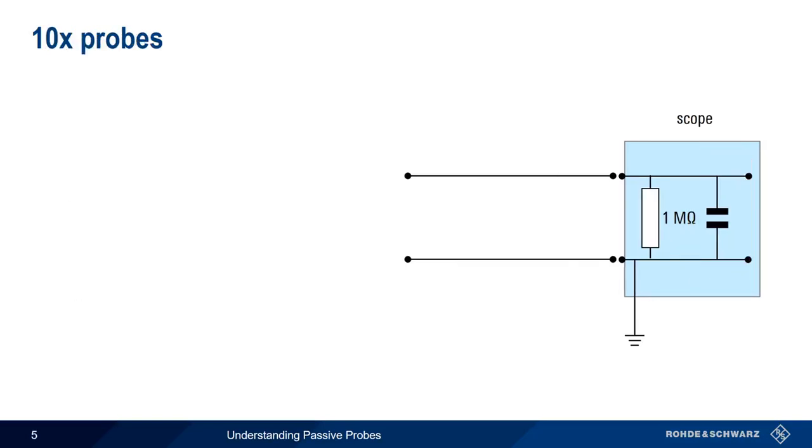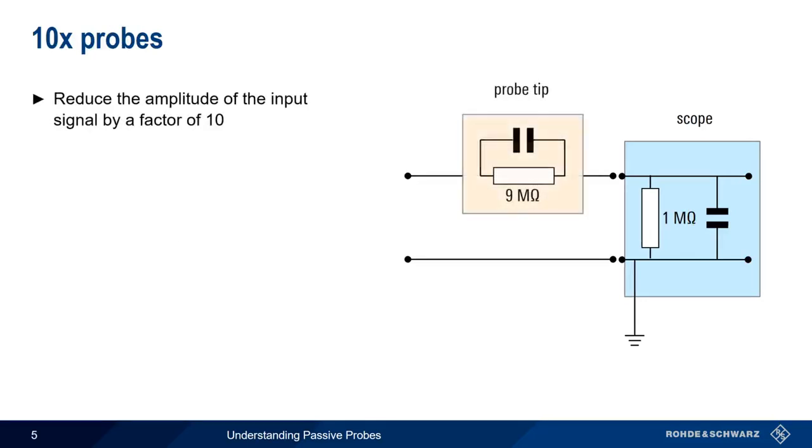10x probes are the standard probes supplied with most scopes. They reduce signal amplitude by a factor of 10, usually by incorporating a 9 megaohm resistor in the probe tip to act as a voltage divider. This added attenuation makes 10x probes good for high-voltage measurements.